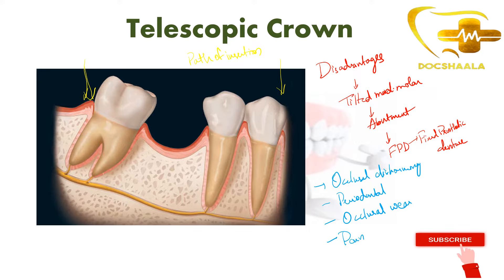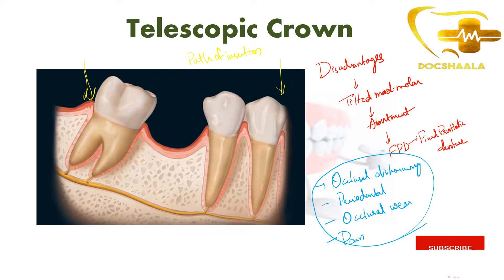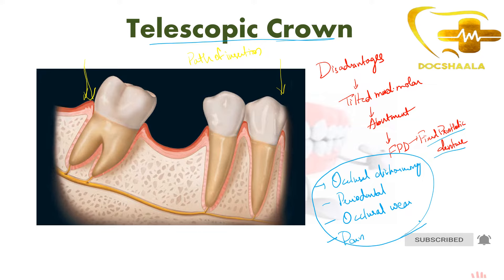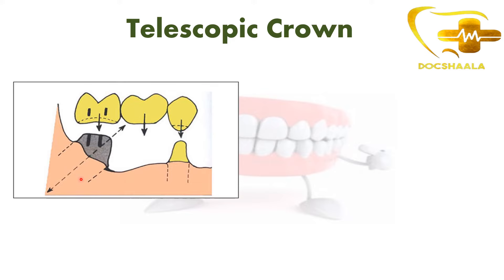To overcome all these disadvantages associated with the tilted molar, we use a telescopic crown while preparing a fixed prosthetic denture on a tilted mandibular molar. What we do here is the mandibular molar is reduced considerably — we make a normal tooth preparation on both abutments.